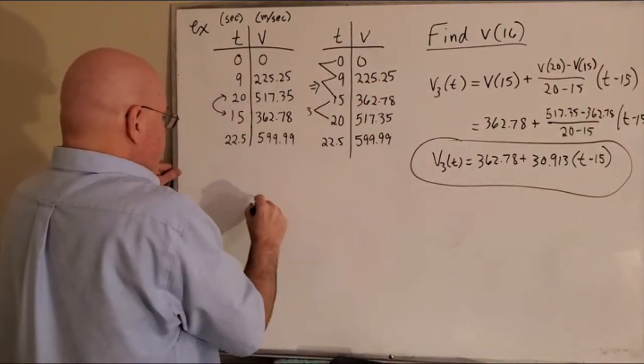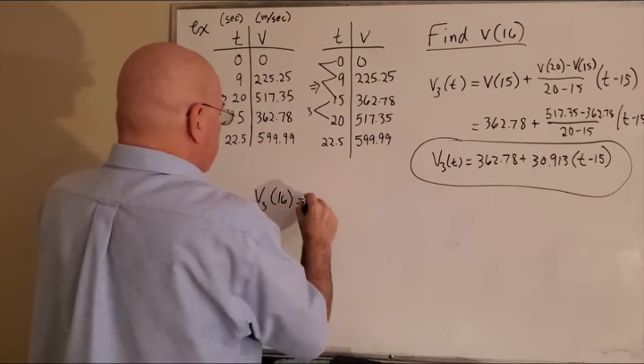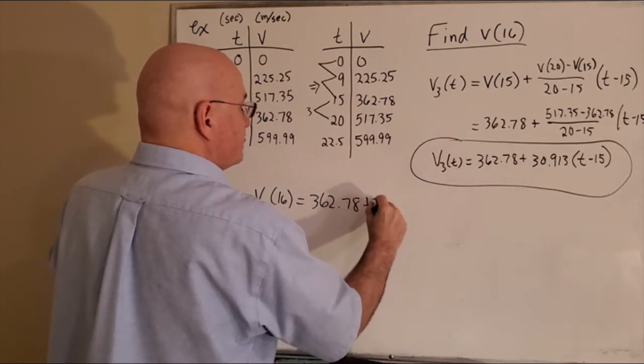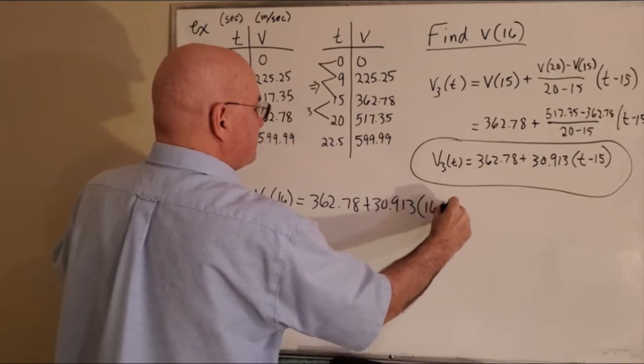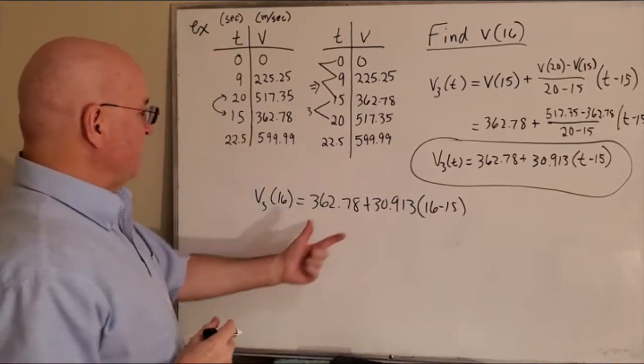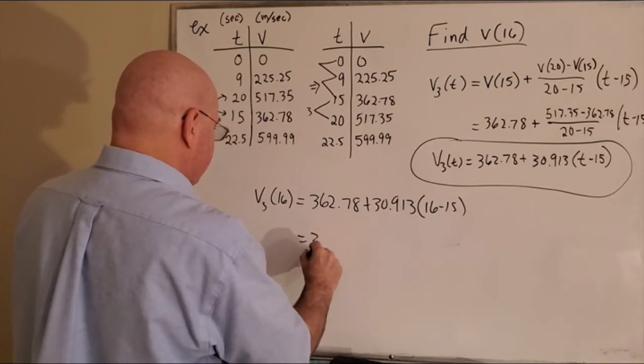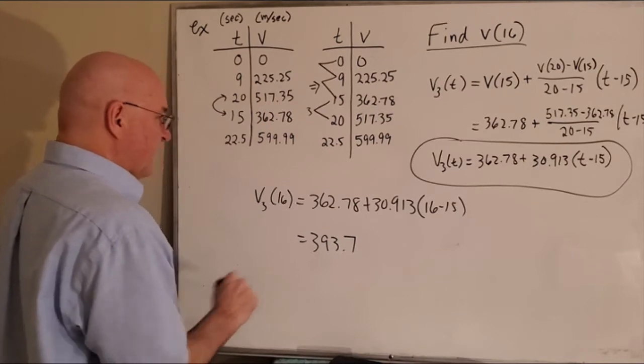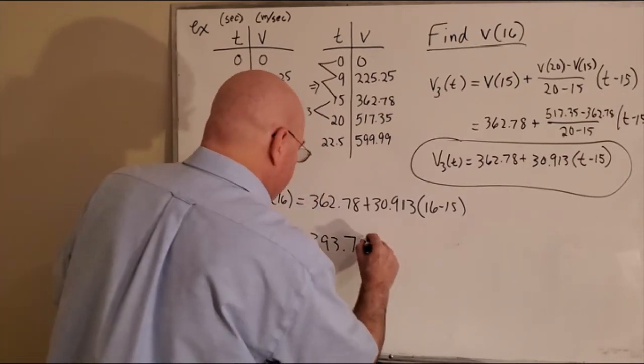So that's the function we're going to use. All we need to do to find V16 is plug it in: 362.78 plus 30.913 times 16 minus 15. That's just one, so all we need to do is add these two numbers together and get 393.7. It looks like I might have rounded a little bit, but I'll go ahead and write meters per second.